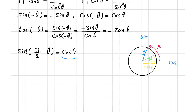Pi over 2 minus theta is this angle. Cosine of theta is the projection of the point on the sine axis, which is this value. So this is sine of pi over 2 minus theta equaling cosine of theta. As you can see, these two values are equal on this circle. This is how I showed you that sine of pi over 2 minus theta equals cosine of theta — it's good to have this illustration in mind to prove similar identities.